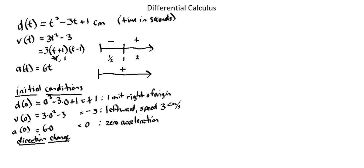That information is found in relation to the velocity function. We can use the sign diagram of the velocity function to identify that time and then calculate our position at that time. Notice that the velocity function changes sign at the value of 1. So when time equals 1, that's my direction change — this is when there's a sign change in the velocity function.